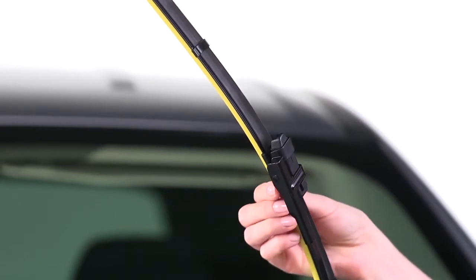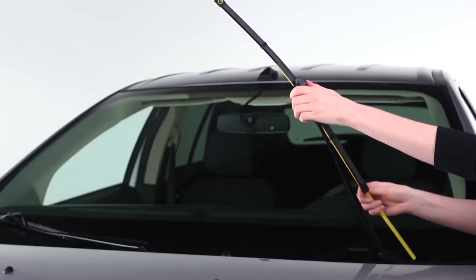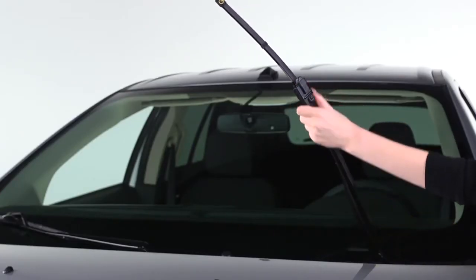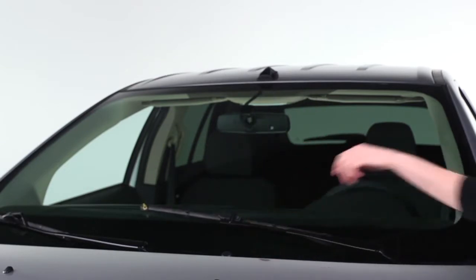Now, rotate the blade making sure the blade is properly fastened. Remove the plastic squeegee cover and lower the arm gently onto the windshield.